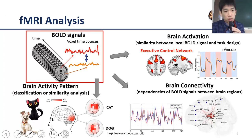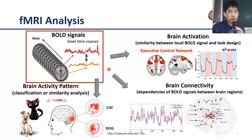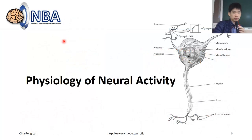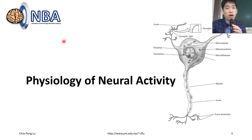As you may recall, this is the general idea for this semester — we will introduce several different image analysis techniques. But today we will start from the very original point: how can we acquire BOLD signals and what does this BOLD signal represent. So in this part we are talking about the physiology of neural activity.